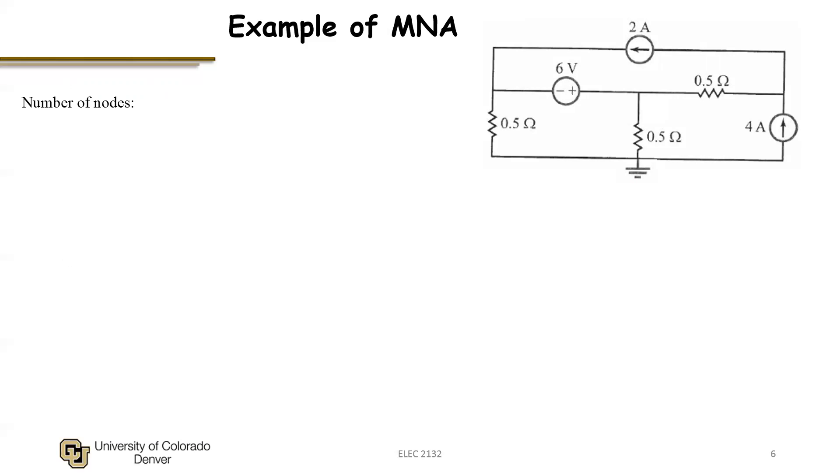If I look at the network, it's easily identified that I have four nodes in this network. We can choose a reference node which is going to be ground, and then we can identify we have three remaining non-reference nodes. As we label our node voltages, we label our ground as zero volts as per normal. So nothing's changed yet from a nodal analysis.